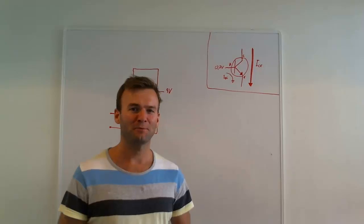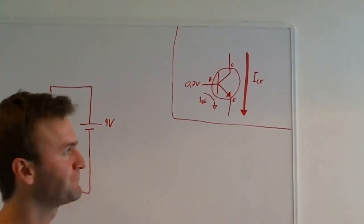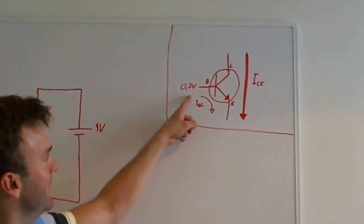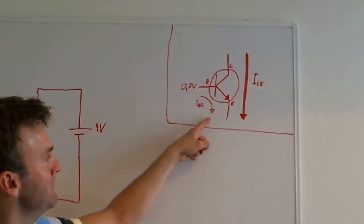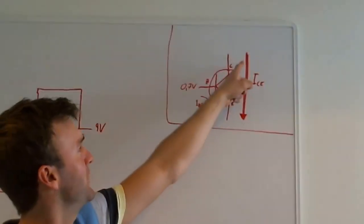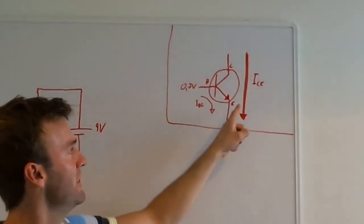So to sum it all up, the transistor works like this. With a small current going here from the base to the emitter, the transistor will be turned on. And it will allow for a bigger current to go here from the collector to the emitter.